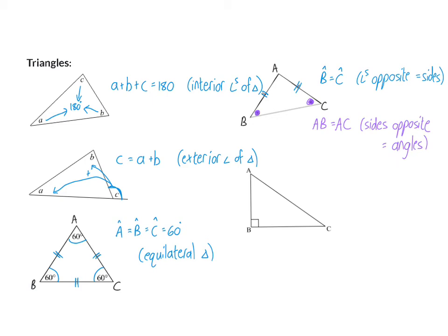Lastly, we have our 90-degree triangle, and here we're going to use the theorem of Pythagoras to say that AC squared is AB squared plus BC squared. My reason, of course: theorem of Pythagoras. So now we've gone through all the theorems on lines, angles, and triangles, and our Grade 11 work for this year will be on circles.